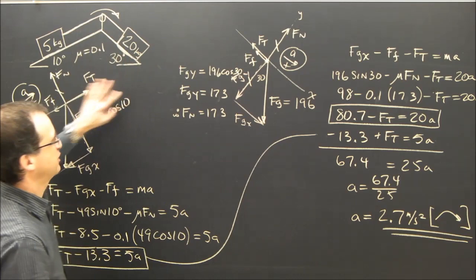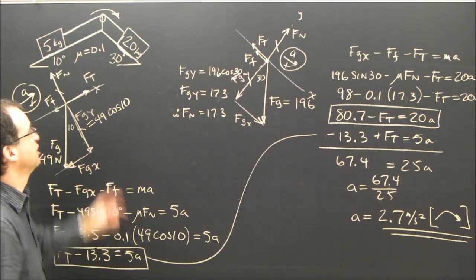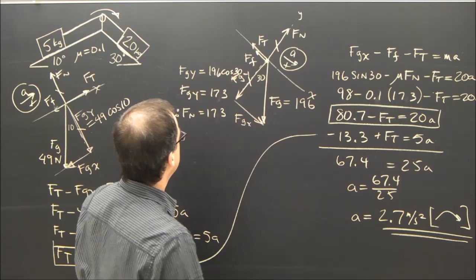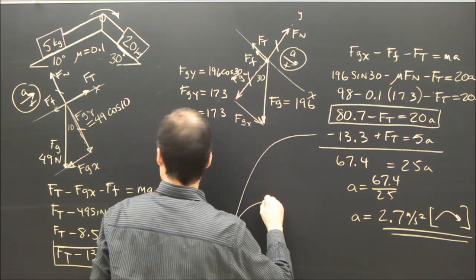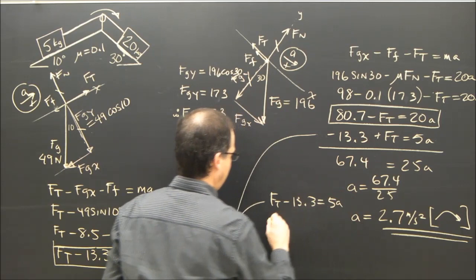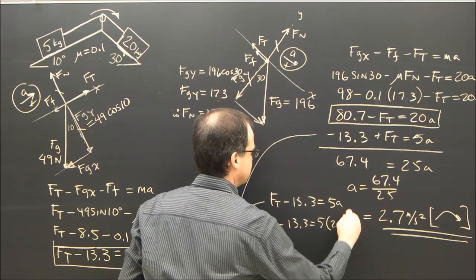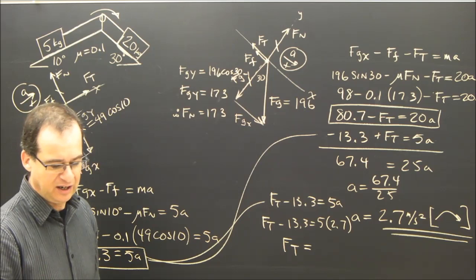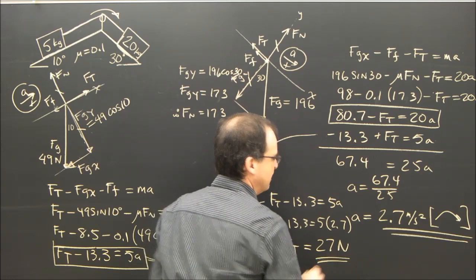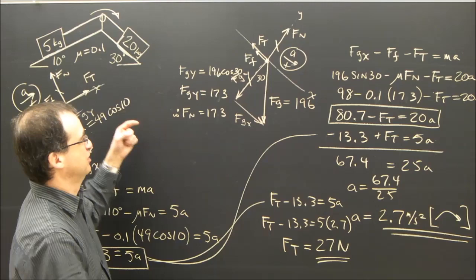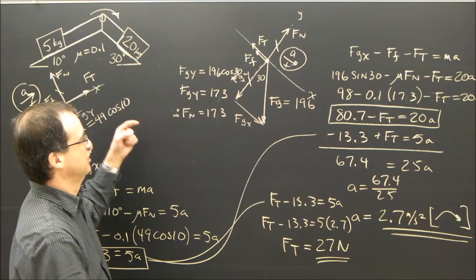Now the question was, what is the acceleration of the system? We found that. What is the tension in the rope? Well, once we've got this, we're okay. We just sub it into one of these equations. We could sub it into this equation here. We could say ft minus 13.3 equals 5a. ft minus 13.3 equals 5 times 2.7. ft equals, in the end, it equals 26.8 newtons, which is roughly 27 newtons. As it was mentioned in the other videos, you don't need to give a direction because it's tension. It's in two directions. It's a pull in the rope.